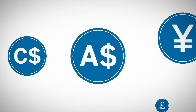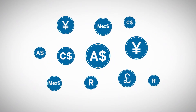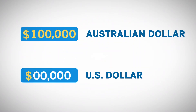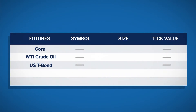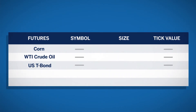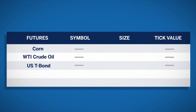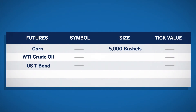Futures contracts for financial products are more straightforward — the US dollar value of 100,000 AUD is simply the US dollar value of 100,000 AUD. Each futures contract specifies the quantity of the product delivered for a single contract, also known as contract size. For example, 5,000 bushels of corn, 1,000 barrels of crude oil, or treasury bonds with a face value of $100,000 are all contract sizes as defined in the futures contract specifications.